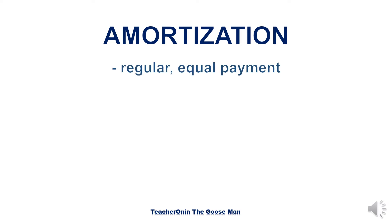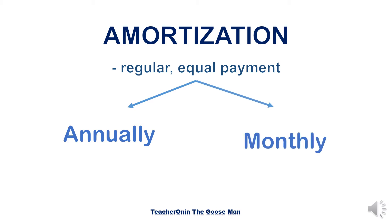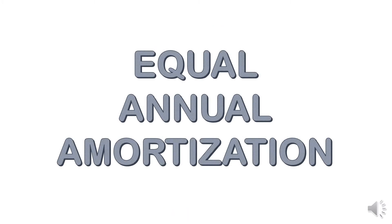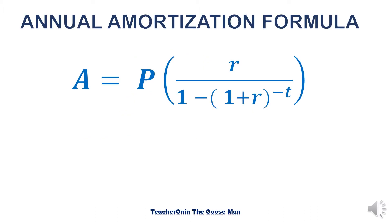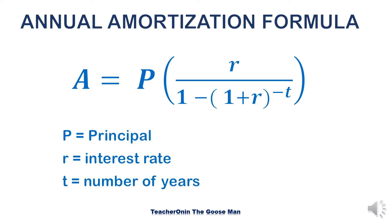In our topic, we will discuss two types of amortization. The first one is annually — equal annual amortization. On the other hand, we will have the monthly — equal monthly amortization. For equal annual amortization, the payment of your loan is once a year. Here is the formula: P is the principal, R is the interest rate, and T is the number of years.